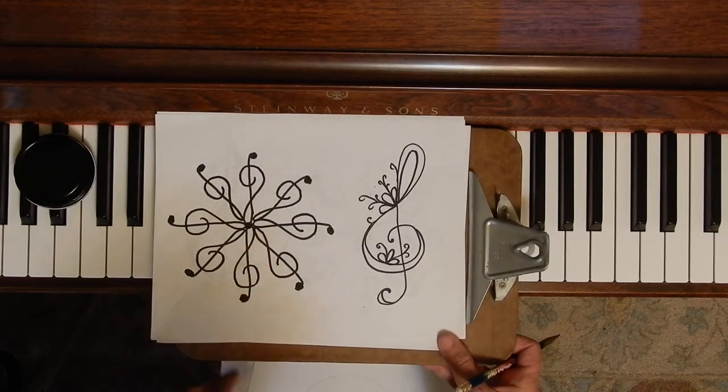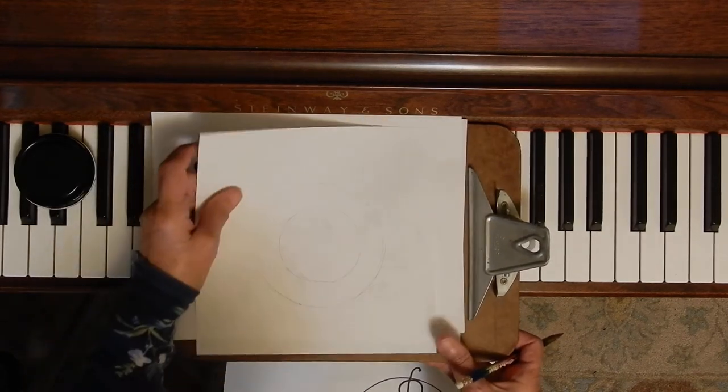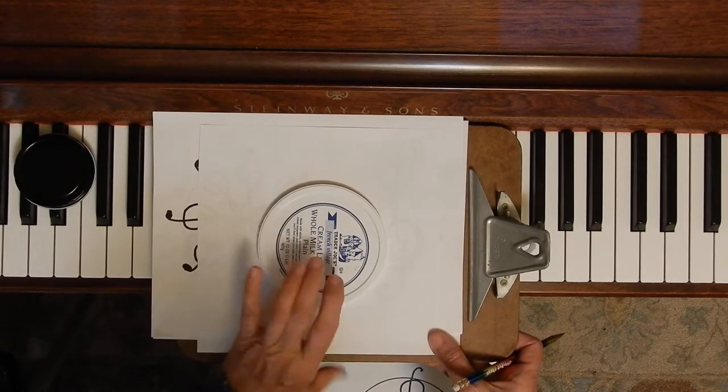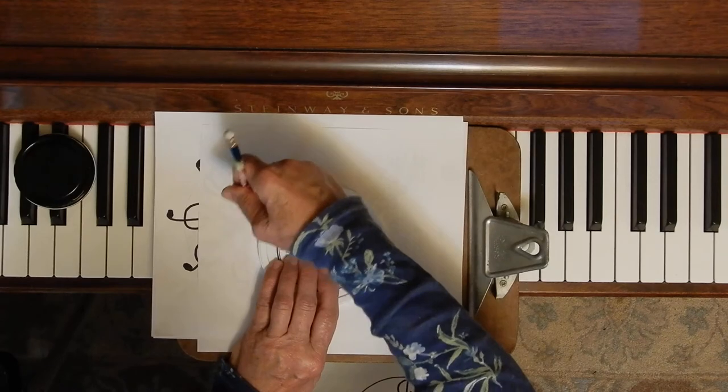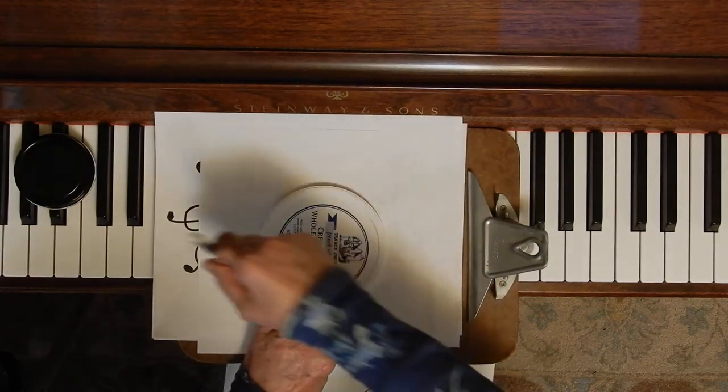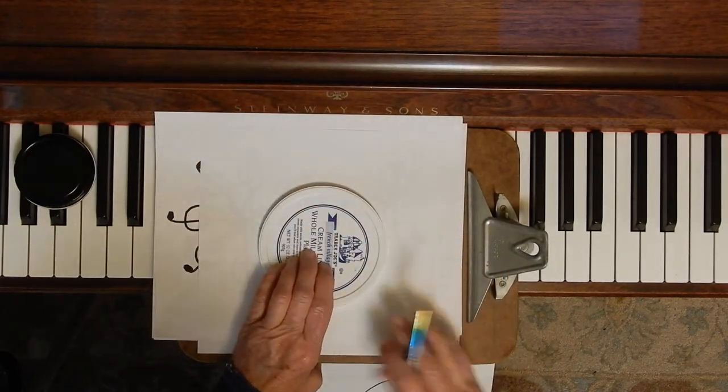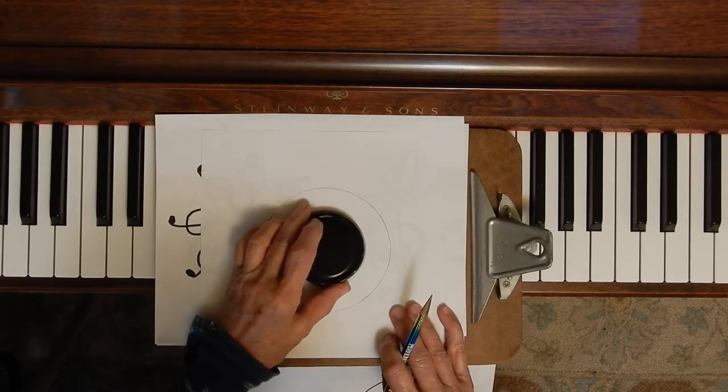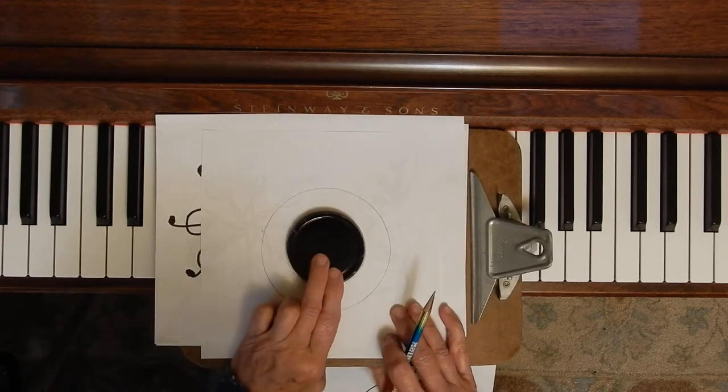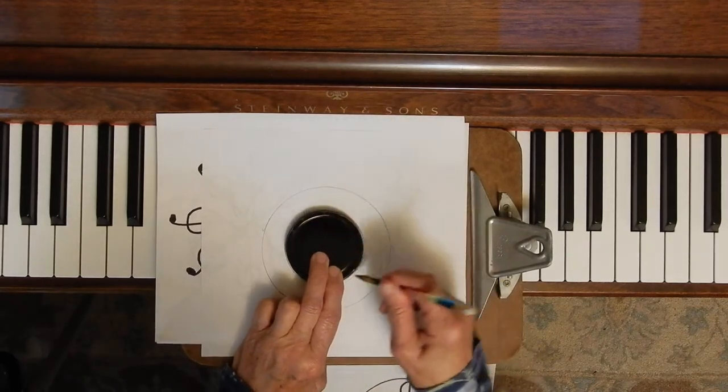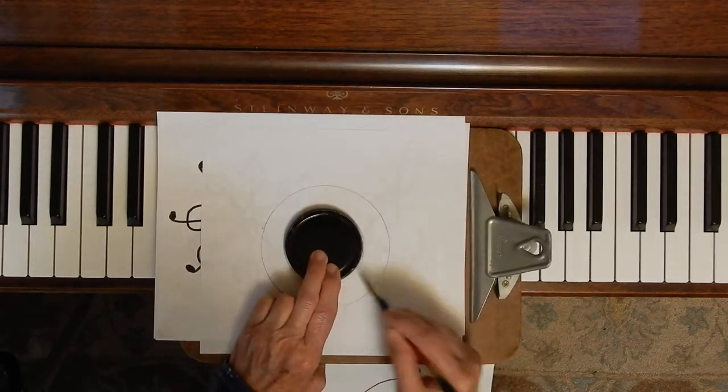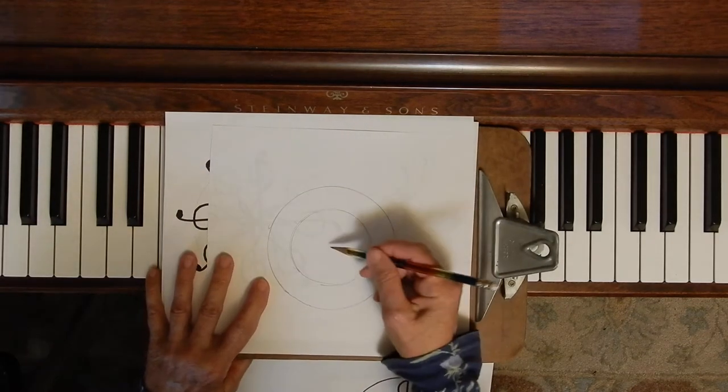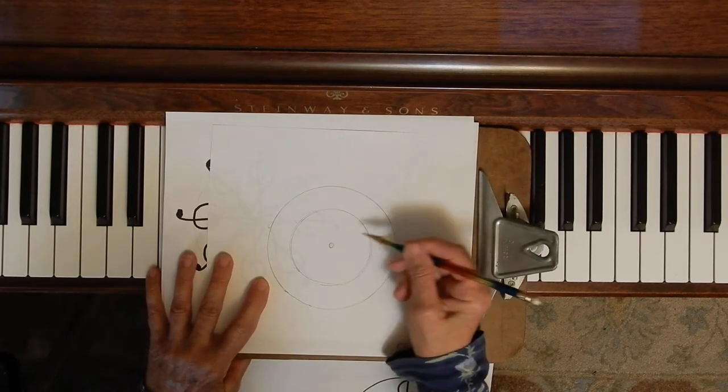The way to do this one is to take two lids, kind of like a big yogurt lid. Do this part in pencil because you're going to erase this later. And then put a smaller one in the middle of that and draw a pencil line around that one. And then in the middle of that, you have to put a dot or a circle.